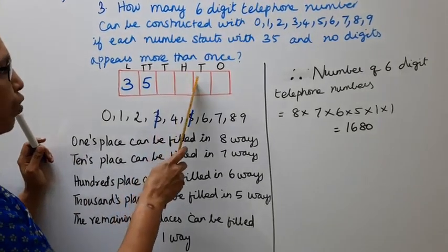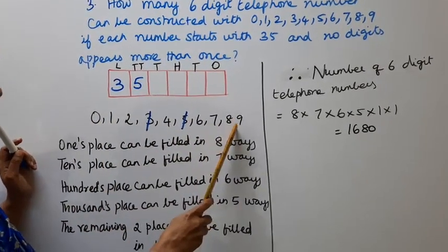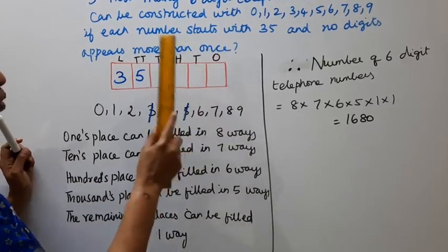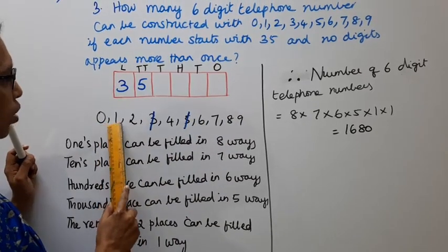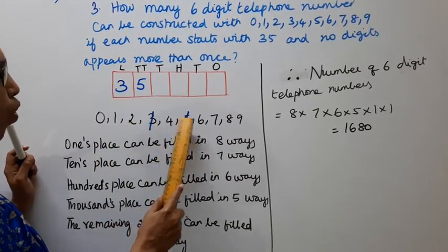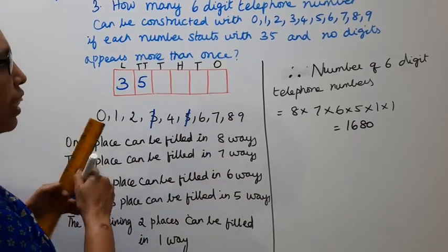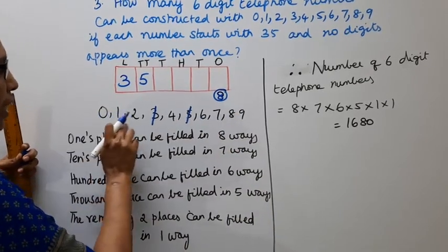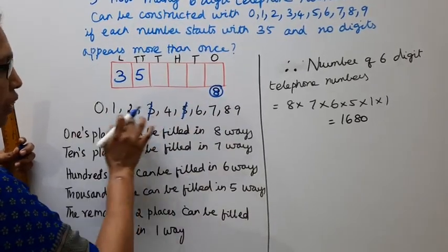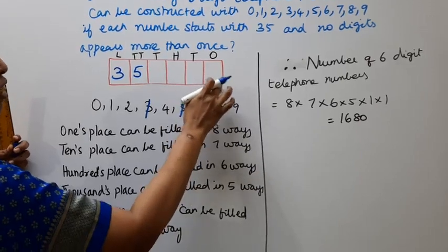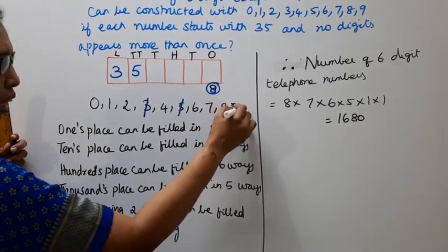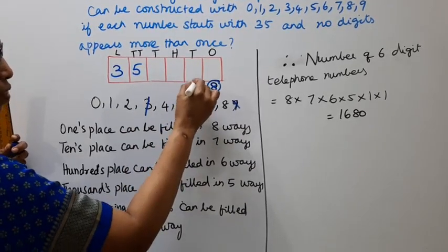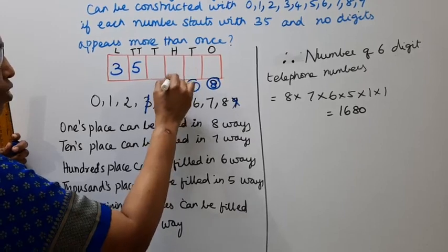The remaining positions must be filled with different numbers. The next place can be filled in 7 ways, and the following place can be filled in 6 ways.